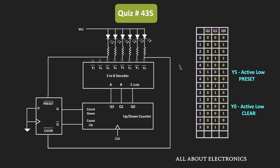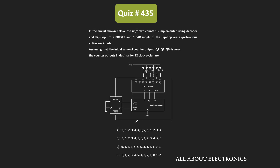That means during the first 12 clock cycles, the counting sequence of the counter will count in this fashion. Initially it will go from 0 to 5, and then it will start counting in the downward direction. From 5, it will count down, and as soon as the count becomes 000, it will once again start counting in the upward direction. So this is the counting sequence for the first 12 clock cycles, and therefore for the given question, option D is the correct answer.